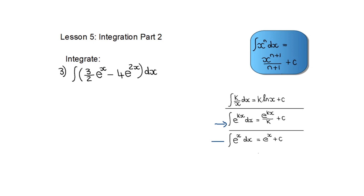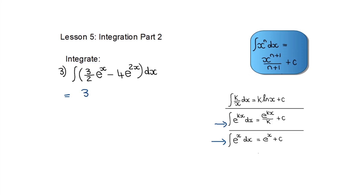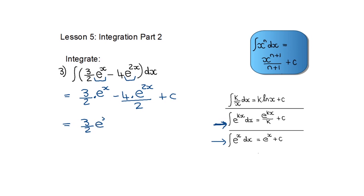In the next example I have more than one term — two terms — using these rules for e to the power x or e to the power kx. The integral of e to the power x is just e to the power x. Then minus, for e to the power 2x I use the rule again: e to the power 2x divided by 2. Remember to add the constant. Simplifying: the 2 divides into 4 two times, giving three halves e to the power x minus 2e to the power 2x plus a constant.